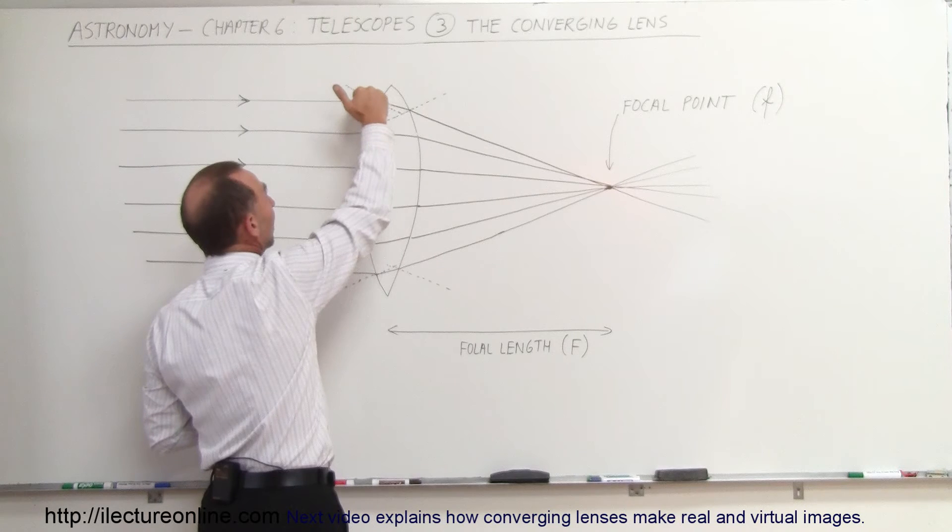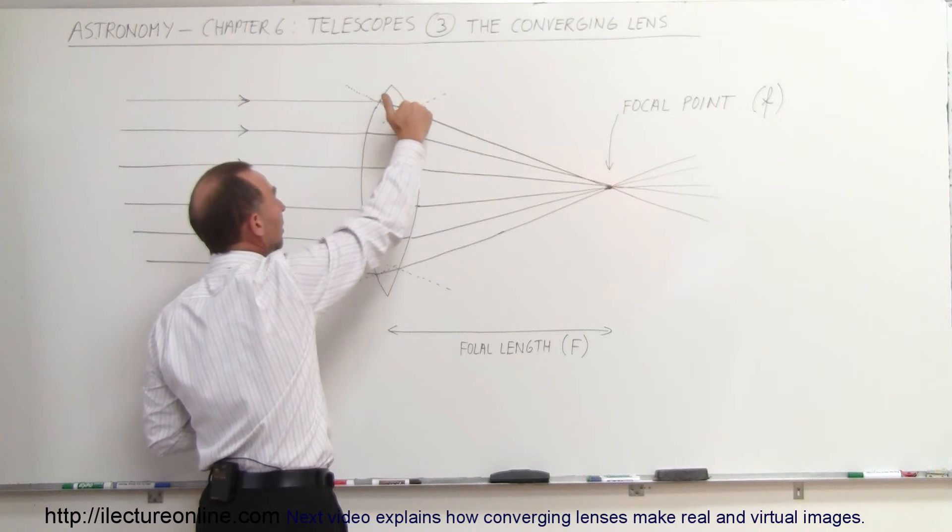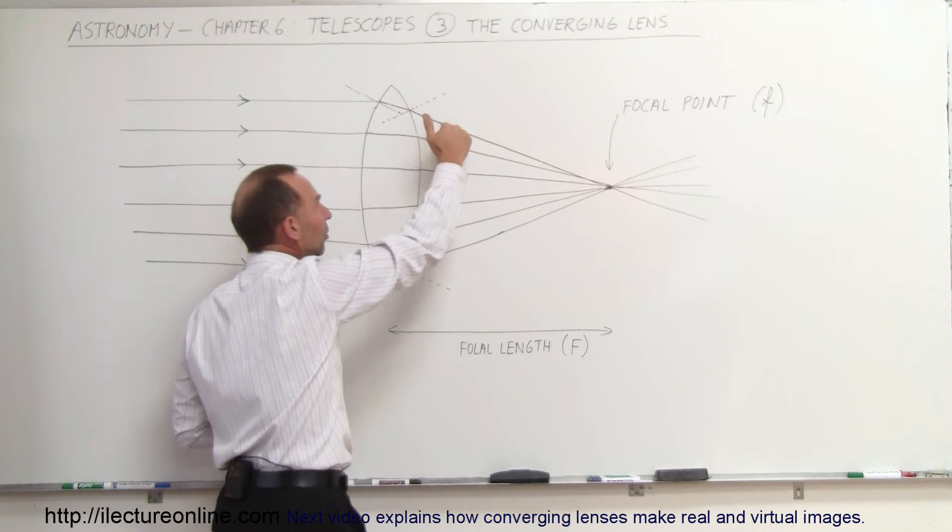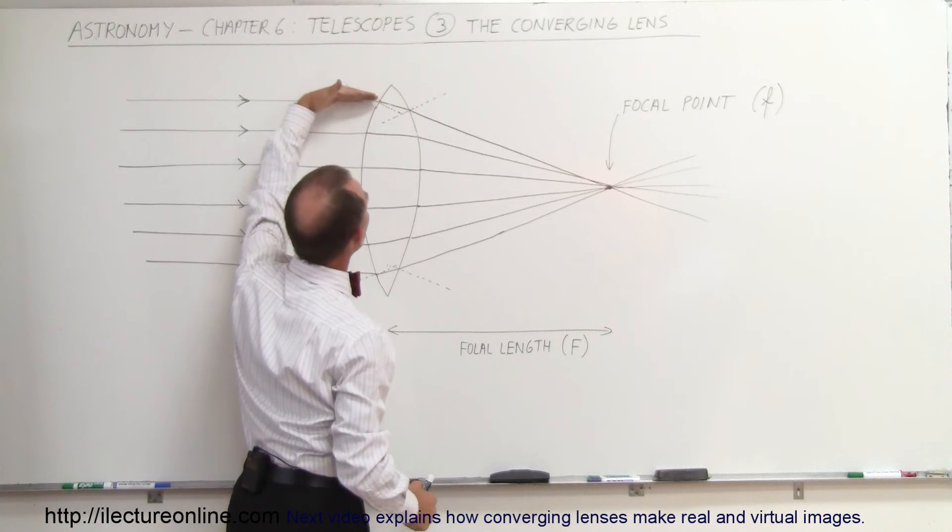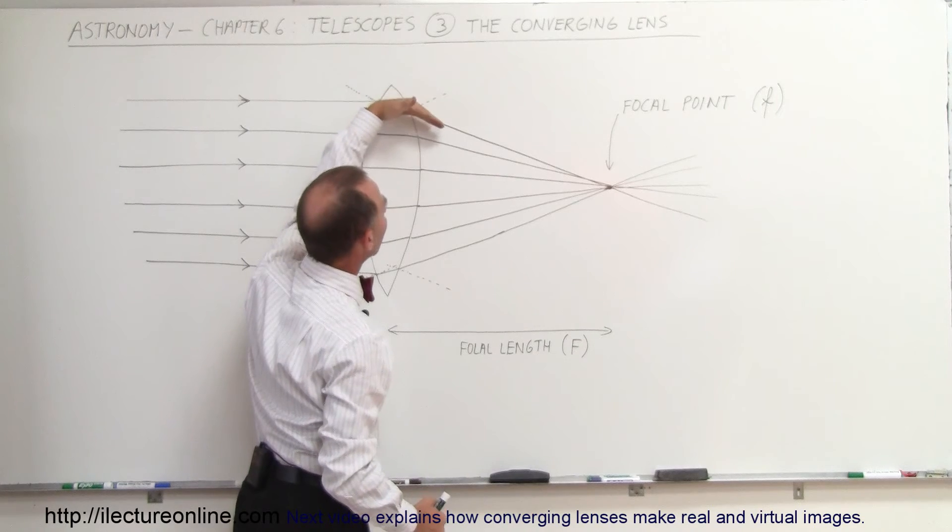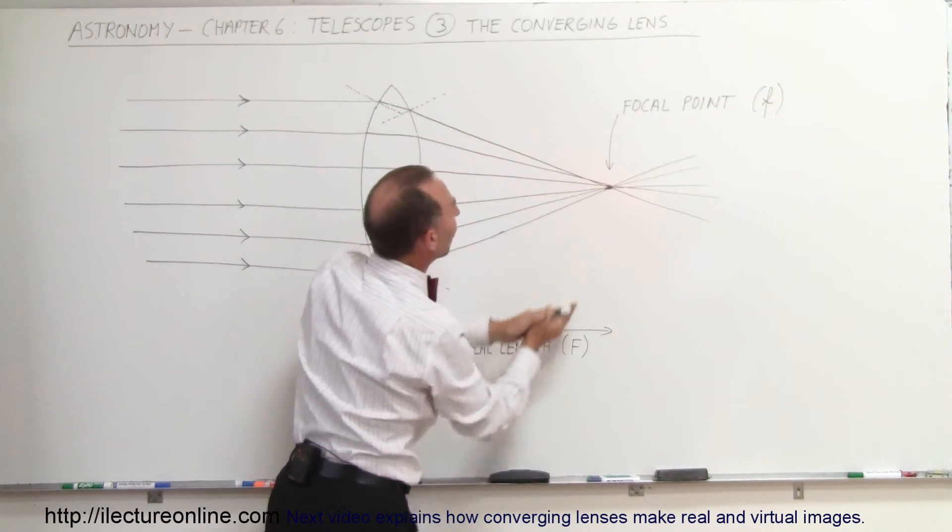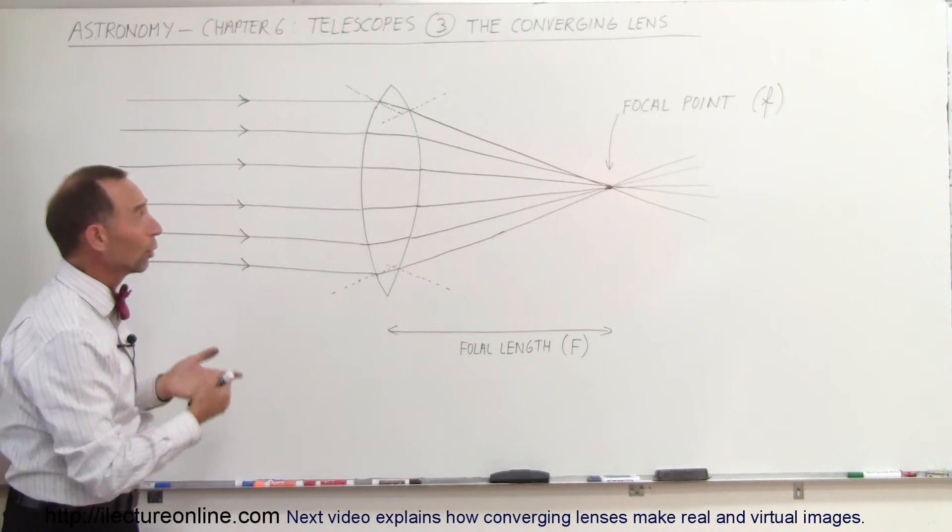Because of that, it first bends towards the normal here, and here bends away from the normal. But it keeps bending it closer, or I should say the angle relative to the horizontal becomes greater and greater. You can see that all the rays then will converge together into the single point, and that's what we call a converging lens.